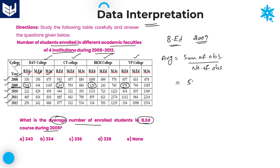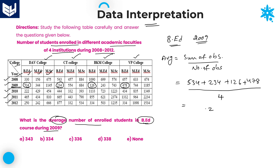Add all the values: 534 plus 234 plus 126 plus 478. These are the four different values over four different institutions, divided by the number of observations which is 4. Adding all the values gives 1372. Therefore, 1372 divided by 4.